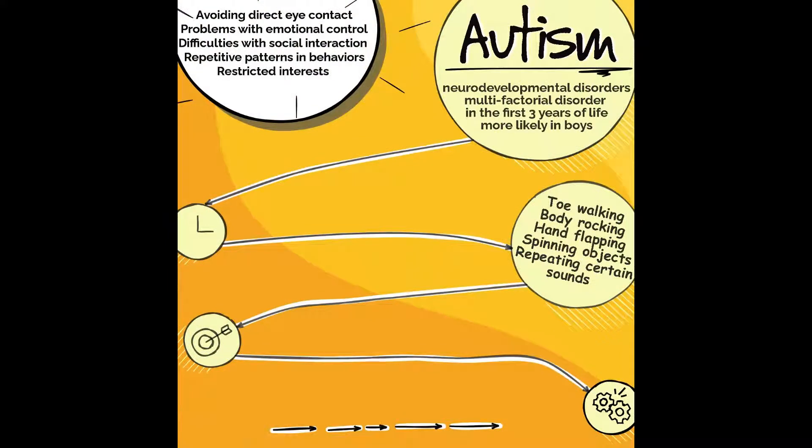Common examples of stereotypy are hand flapping, body rocking, toe walking, spinning objects, and repeating certain sounds or phrases.